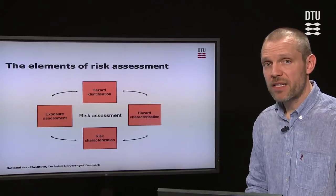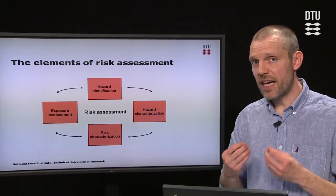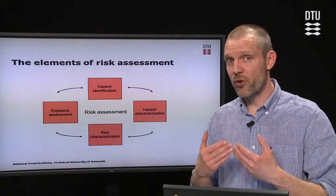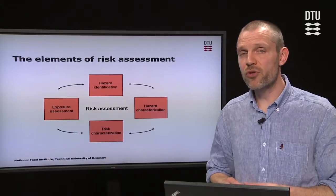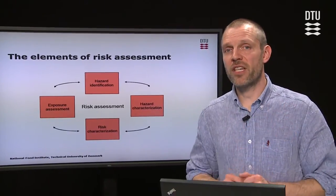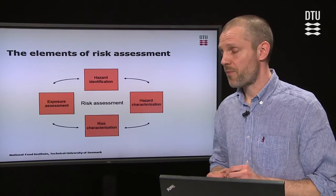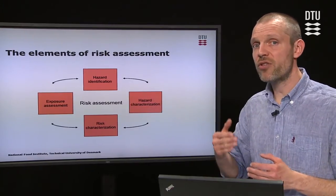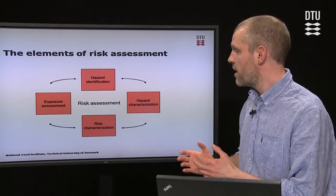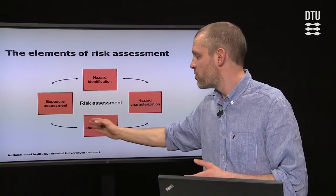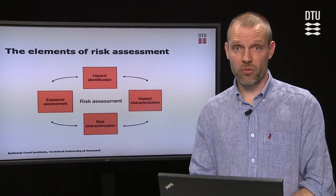I will end by summarizing the elements in risk assessment. First, you have hazard identification, where you identify the microbe that causes adverse effects in the consumer. Then you build an exposure assessment model describing what happens in the production line from where the pathogen enters the food until the time of consumption — this can be done by qualitative or quantitative methods. Then you work with hazard characterization — how the consumer responds to the exposure — and integrate the exposure with the response to estimate the risk for the consumer given different situations of pathogen control in the food.